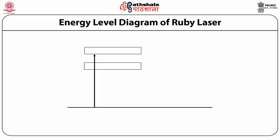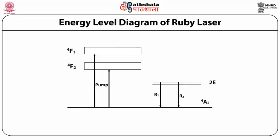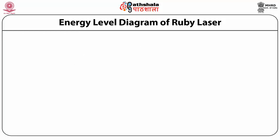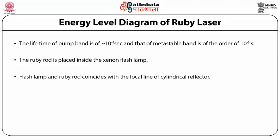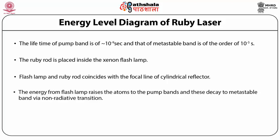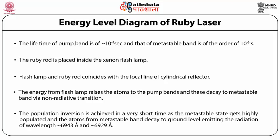Although there is a violet emission at 0.42 micrometer, the most commonly used wavelength is 6943 angstrom. The lifetime of the pump band is of the order of 10⁻⁹ seconds, and that of the metastable band is of the order of 10⁻³ seconds. Energy from the flash lamp raises the atoms to the pump bands; these decay to the metastable band via non-radiative transition. Population inversion is achieved quickly as the metastable state becomes highly populated, and atoms decay to the ground level emitting radiation at 6943 angstrom and 6929 angstrom, with lines separated by about 14 angstrom.